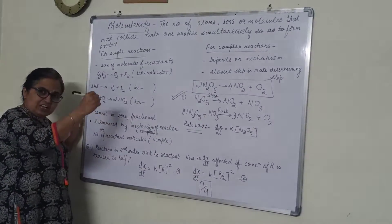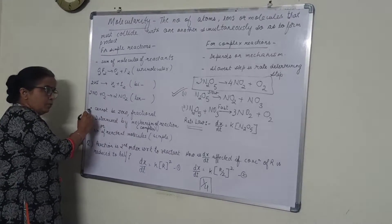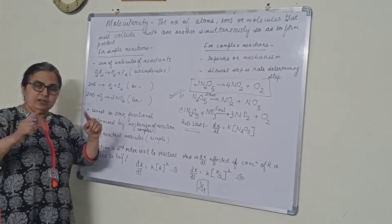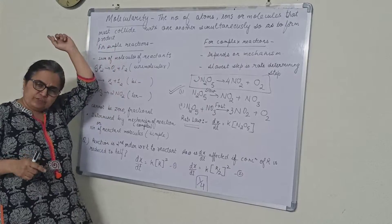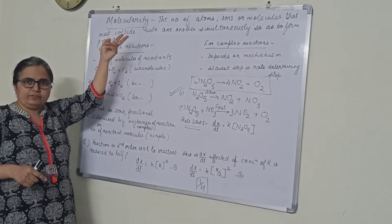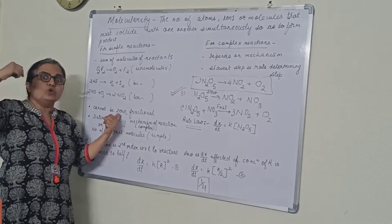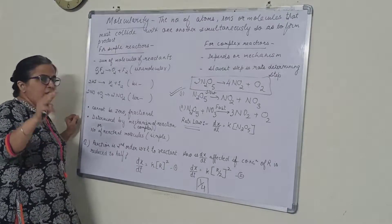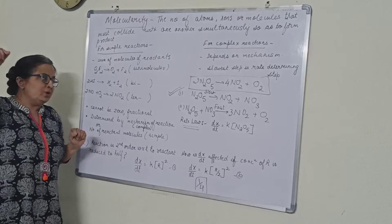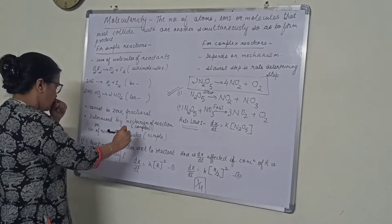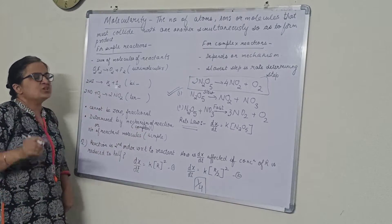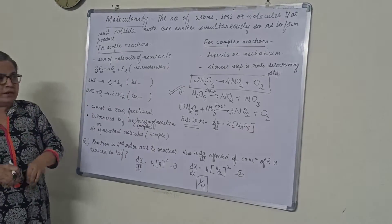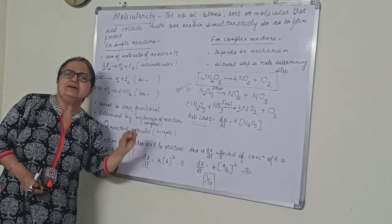Now, like we discussed for order, we are saying here also, molecularity cannot be 0 or fraction. But order can be, one difference. The second difference you can write a definition only. Second will be order can be 0, can be fractional, molecularity cannot be. Third difference you will write, order is determined experimentally, whereas this is determined by mechanism. If it is a complex reaction, then the mechanism decides the molecularity. If it is a simple reaction, then whatever is the number of the reactants is the molecularity.